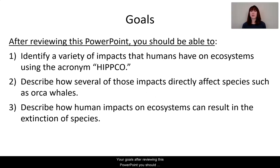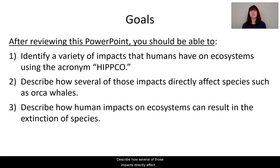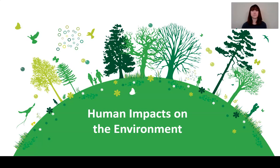After reviewing this PowerPoint, you should be able to: number one, identify a variety of impacts that humans have on ecosystems using the acronym HIPCO — an acronym where each letter stands for one of those impacts that humans have on the environment. Number two, describe how several of those impacts directly affect species such as orca whales. And number three, describe how human impacts on ecosystems can result in the extinction of species.